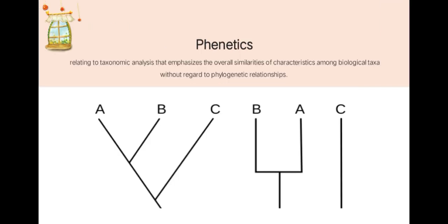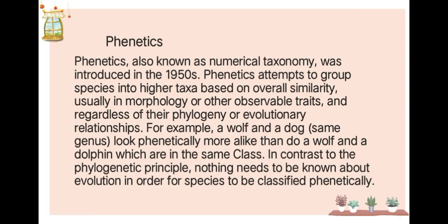Next, phenetics — a taxonomic analysis that emphasizes the overall similarities of characteristics among biological taxa without regard to phylogenetic relationships. Also known as numerical taxonomy, it was introduced in the 1950s. Phenetics attempts to group species into higher taxa based on overall similarities, usually morphology or other observable traits. For example, a wolf and a dog are in the same genus and look phenetically more alike than a wolf and a dolphin, which are in the same class. In contrast to the phylogenetic principle, nothing needs to be known about evolution for species to be classified phenetically.